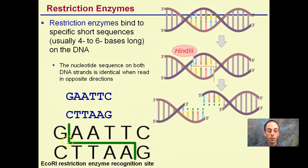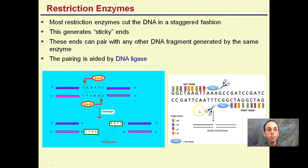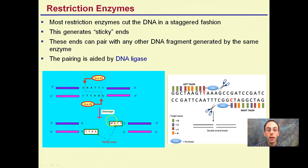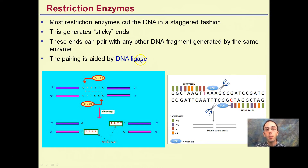This is another example for the ECO-R1 restriction enzyme. Most restriction enzymes cut DNA in a staggered fashion, which generates sticky ends. Sticky ends want to kind of rejoin together — they want to rebind. These ends pair with any other DNA fragment cut with the same enzyme, and DNA ligase comes back to link the DNA together to form the double strand again.